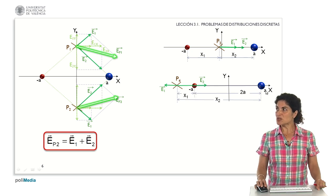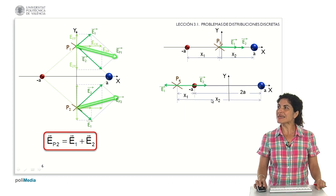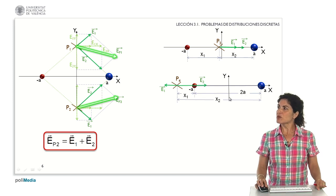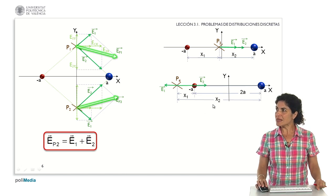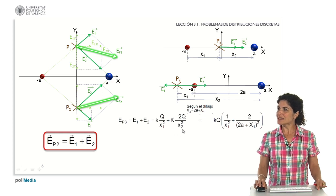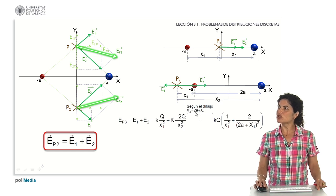We place the two particles carefully in the reference system and define the distances with respect to point P sub 4 under study. The positive charge is at a distance X sub 1 from point P sub 4, the negative at a distance of 2A according to the parameter of the statement, and the negative charge with respect to the point of study at a distance X sub 2. Taking into account the sum of the two contributions, these distances can be related since X sub 2, as we see in the diagram, would be the sum of 2A plus X sub 1.